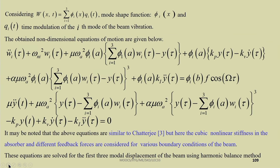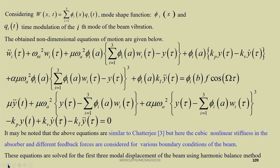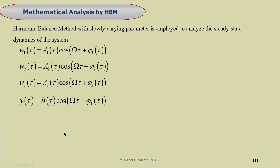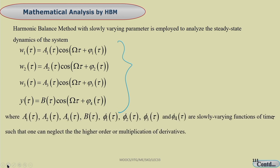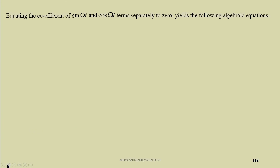Since w is a function of both x and time, one reduces the system using Galerkin's method: w(x,t) = φᵢ(x)·qᵢ(t). Depending on the number of modes considered, the coefficient matrix will differ. Using orthogonality of eigenvectors, the system is reduced to a simpler form, and then one can apply the method of multiple scales or the harmonic balance method.